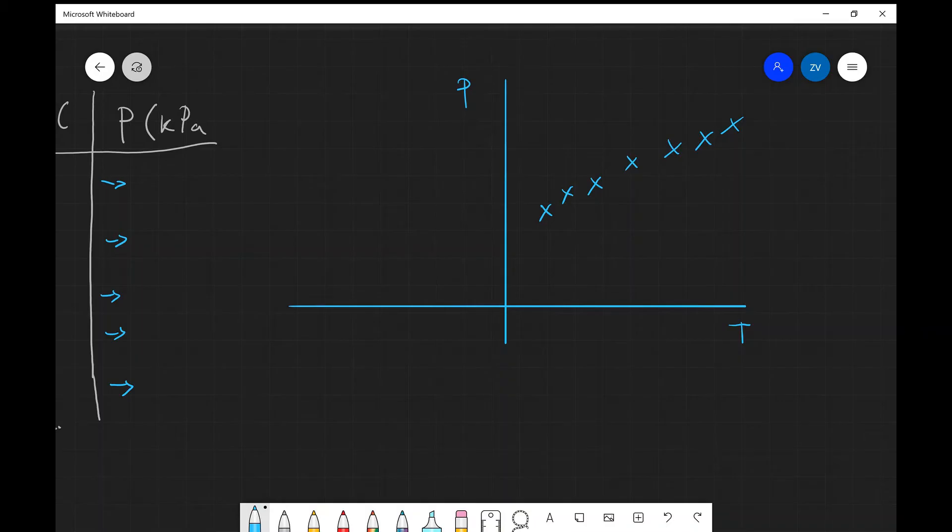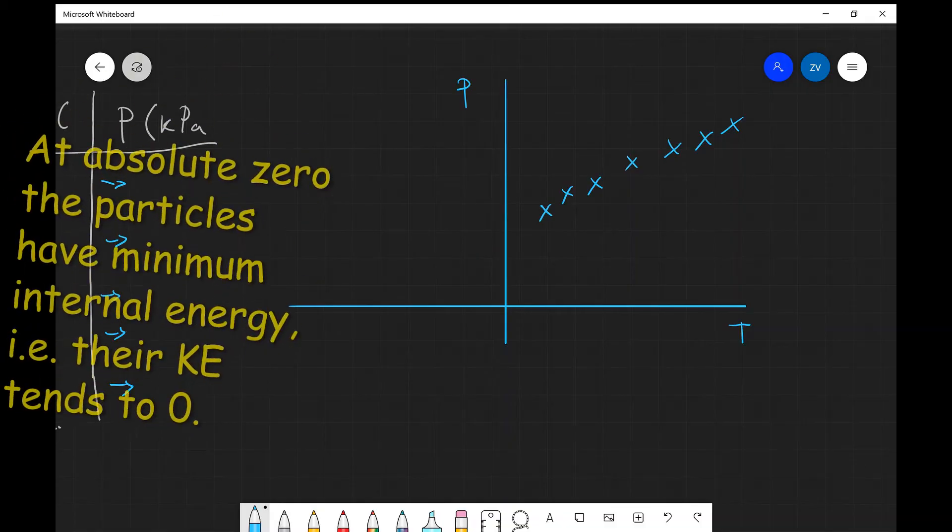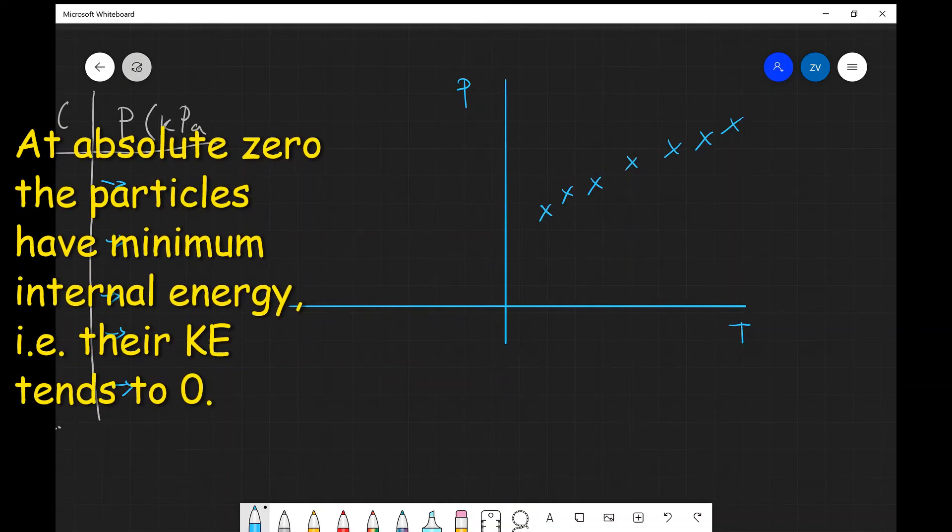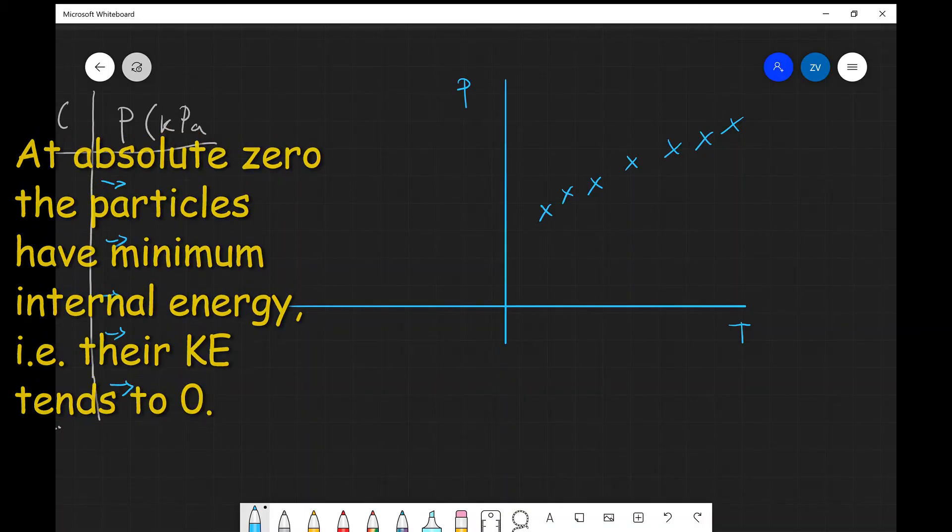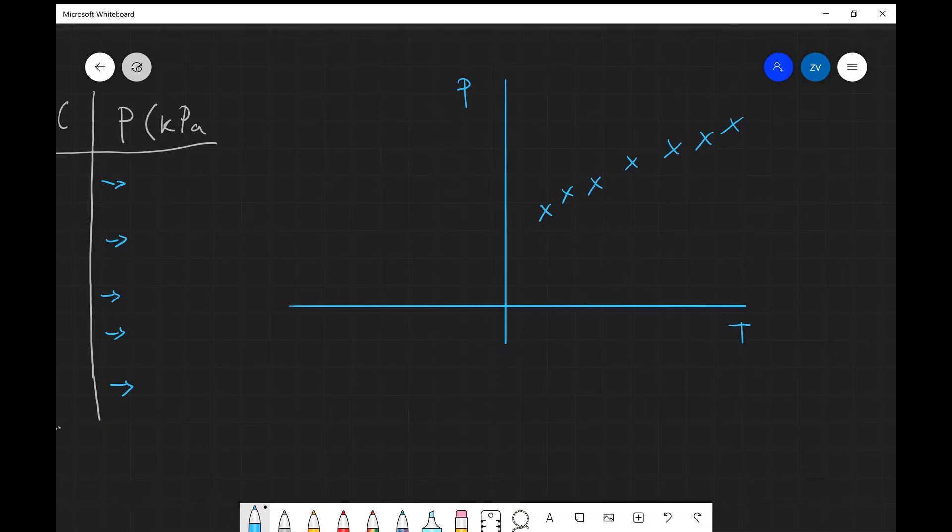to actually determine the value at absolute zero. We have to remember as well the definition of absolute zero. Remember, absolute zero is the temperature at which the particles of a substance have minimum internal energy. In other words they're mostly, their entire energy is just potential energy, so it means that they're hardly moving.